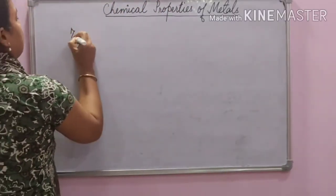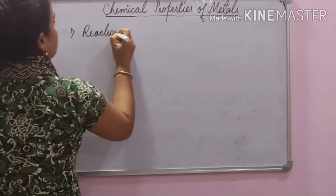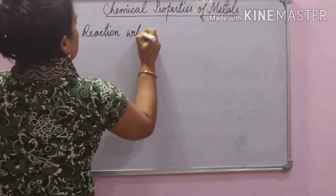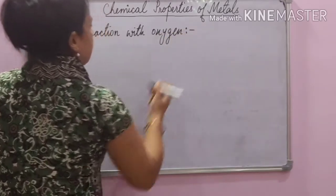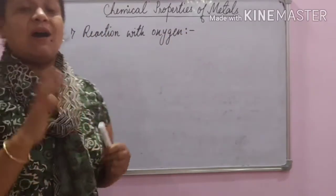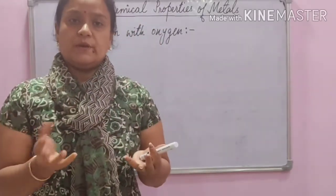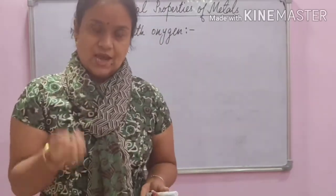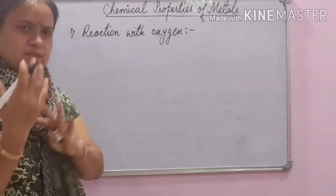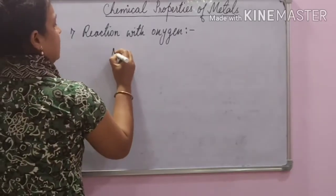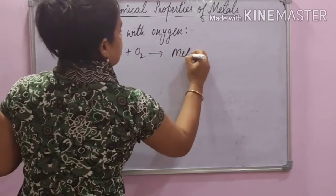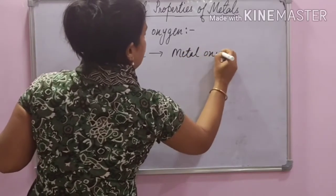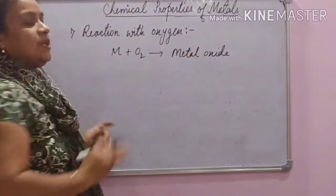What happens when a metal reacts with oxygen? Oxygen is readily available in the environment. Certain metals are highly reactive and when exposed to open air, they directly react with oxygen and form oxides. Simply remember: metal plus oxygen gives metal oxide.